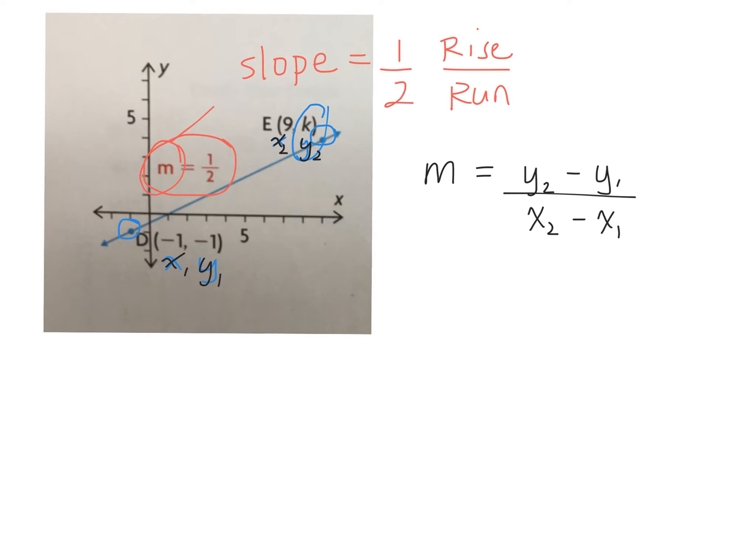So what are we trying to find? What's the missing value? K, which we labeled as Y2, right? We know M, and we know part of the coordinate of E, and we know all of coordinate D. So what do you think we should do with that information?